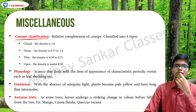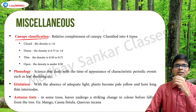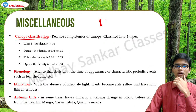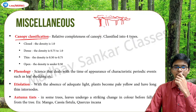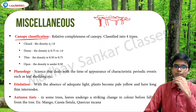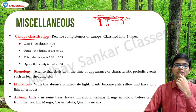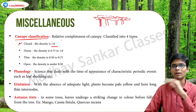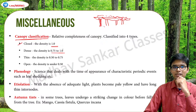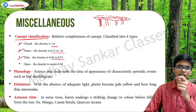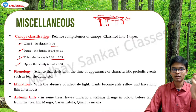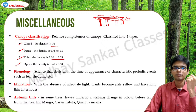Some miscellaneous topics: first, canopy classification. A canopy is when the top portion of many trees acts as a bed, preventing sunlight from reaching the ground. Closed canopy means density is perfect at 1.0 - not even a single ray of sunlight comes down. If the density is between 75% to 100%, then it is dense canopy. If it is between 50 to 75%, then it is thin canopy. And if it is less than 50%, then it is known as open canopy.